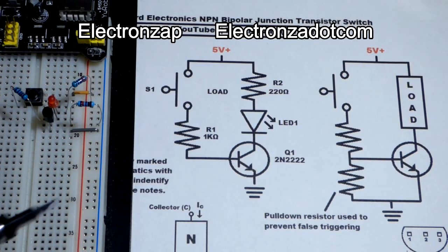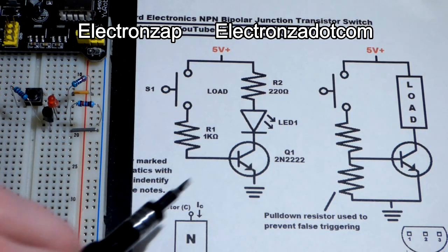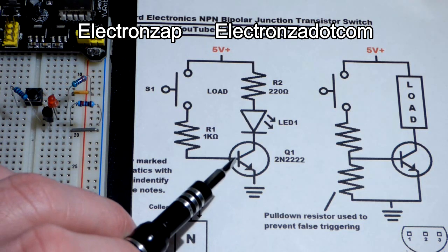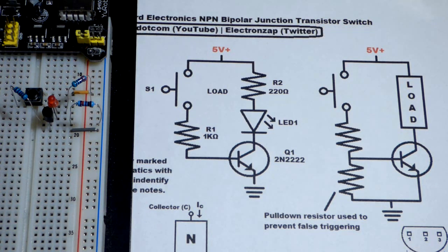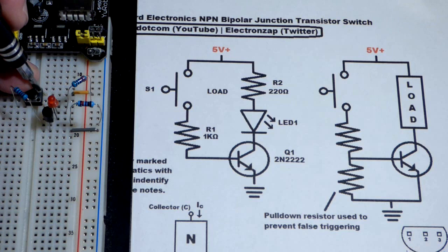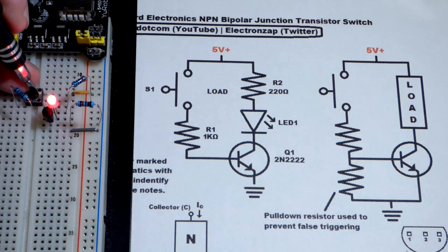So now in this video, we're going to look at the NPN bipolar junction transistor wired up as a switch. It's pretty straightforward. Right now, the transistor is off. When we press the mechanical switch here, now the transistor is on.